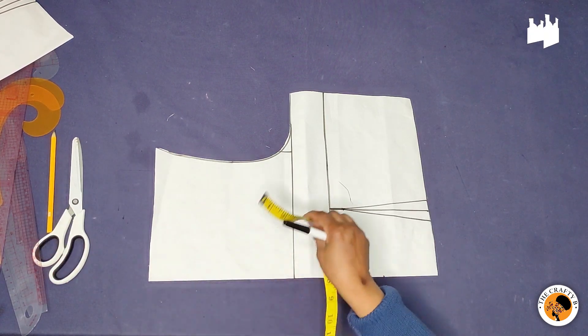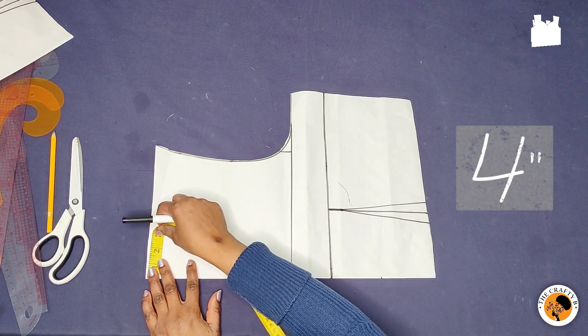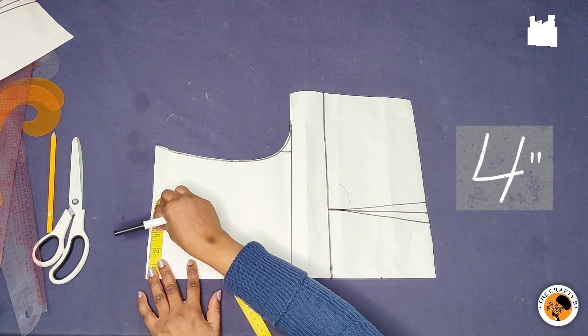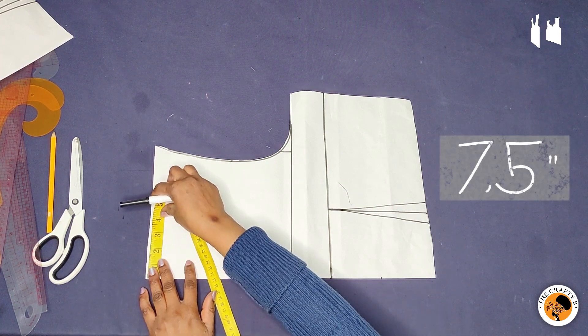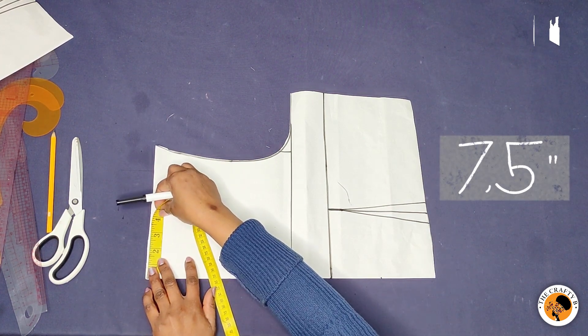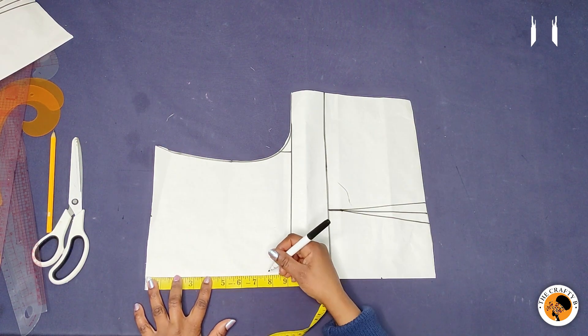So to cut your sweetheart neckline, I'll be taking four inches for the neck width, that's the wideness of the neck is four inches, and then seven and a half inches for the neck depth. You can make seven inches depending on how deep you want your sweetheart neckline to be.